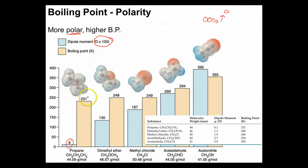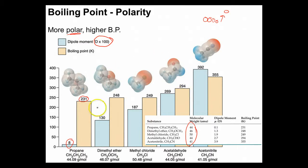Looking at propane's boiling point, we're at 231 Kelvin. Now let's start putting on more dipole moment by swapping some atoms in and moving them around so the electrons start being tugged around a little bit. What we try to do is keep a set of molecules with pretty close to the same molar mass. There's going to be a little wiggle room there, but I'll show that it shouldn't be too big of a problem, and I can justify it with the numbers.